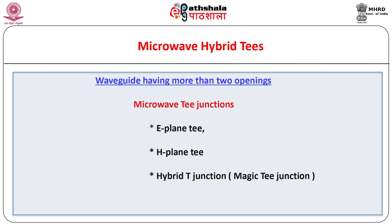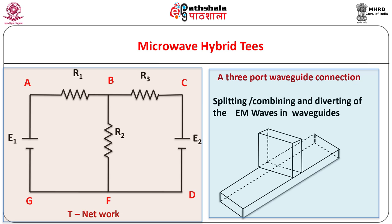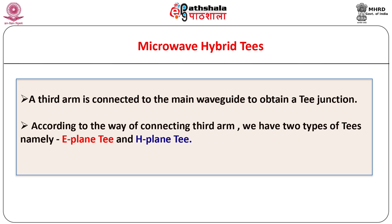Let us try to know in brief about some important points related with such microwave T-junctions. In some applications it is needed to split the electromagnetic waves in one waveguide and divert them into the other two waveguides. For this we have three waveguides connected to each other giving rise to a single device with three waveguide inputs — in other words it is a three port waveguide connection. Can you compare it with a T-network comprising of three impedances? The only difference lies in the replacement of impedances by waveguides. Instead of a coupling of three different waveguides one may think that the third arm is connected to the main waveguide to obtain a T-junction. Where and how to connect the third arm — two ways are possible — accordingly we have two types of T's: E-plane T and H-plane T.